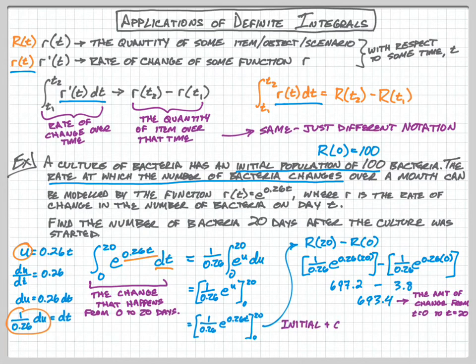So clearly initial plus change is going to equal our total value on day 20. We're going to take our initial 100, add in our 693.4 that we calculated, and we end up with our total of 793.4 bacteria on day 20. Now if we wanted to be a little bit more precise with this, we would say that it's 793 bacteria because we don't really have partial bacteria. I guess you could have partial bacteria as it's splitting or multiplying, but maybe a better answer might be 793 bacteria.